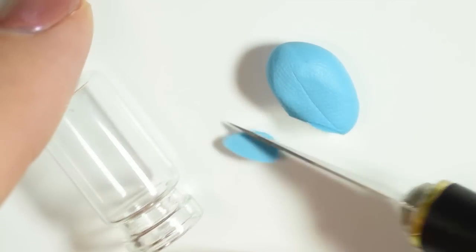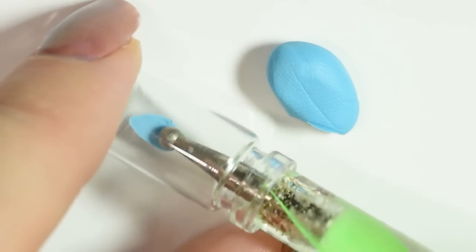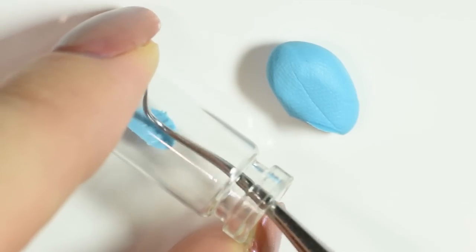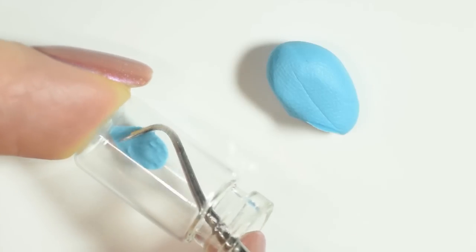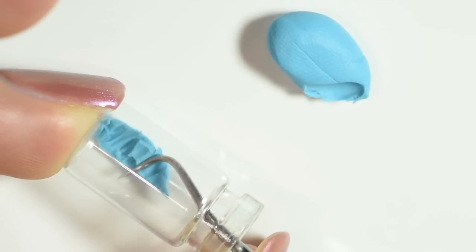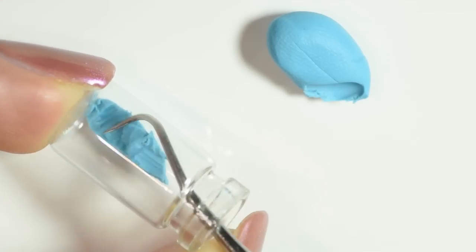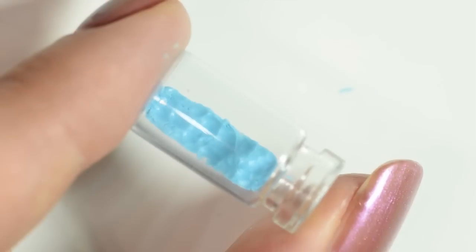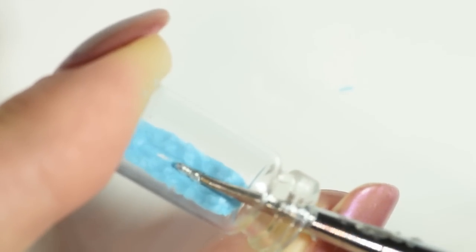To make a base for this ship, take some blue clay to be the ocean and stick it inside the bottle. Make a little dent down the middle so the ship has a place to sit. Then add a little bit of liquid clay, any brand will do, to make sure the ship will stick.